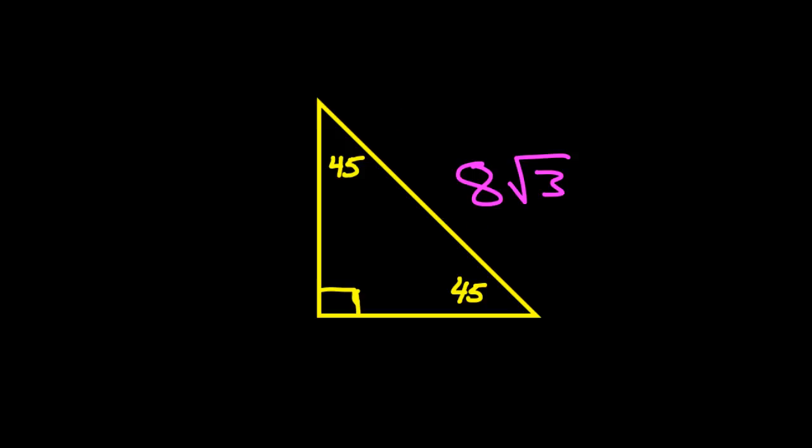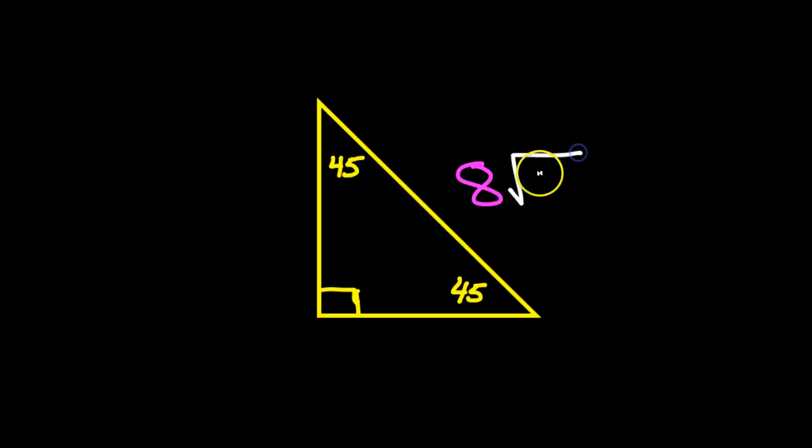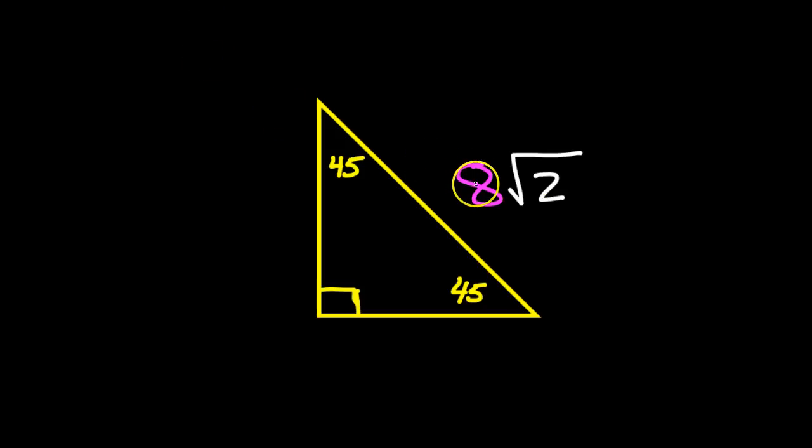If they had said eight radical two, then this problem would be very easy. If the hypotenuse is eight radical two, then the legs must be eight and eight. Eight, eight, eight radical two. But that's not what happened.